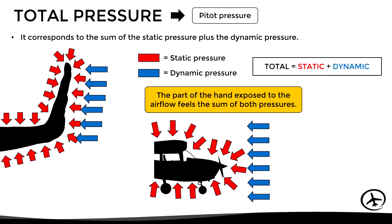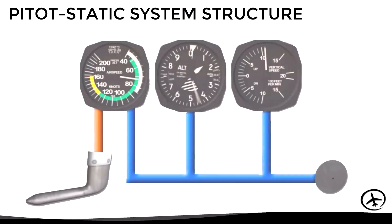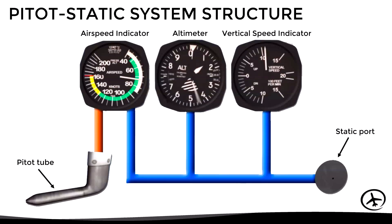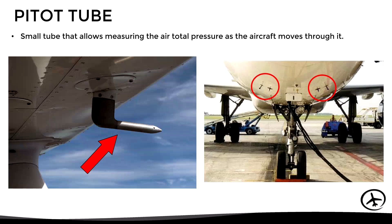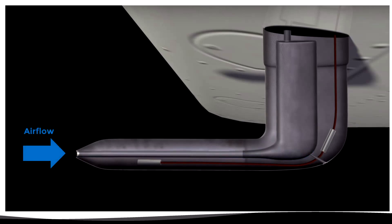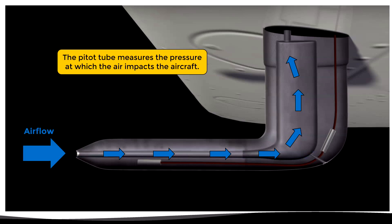Having understood all these definitions, let's now see what the pitot-static system consists of. In its simplest form, it is composed of a pitot tube and a static port that feed the three instruments previously mentioned. The static port sends information to all three — the airspeed indicator, the altimeter, and the vertical speed indicator — while the pitot tube only sends information to the airspeed indicator. The pitot tube is a small tube that measures the total pressure of the air as the plane moves through it. It is typically found under the wings on small aircraft or at the front of the fuselage on larger aircraft, aligned with the longitudinal axis.